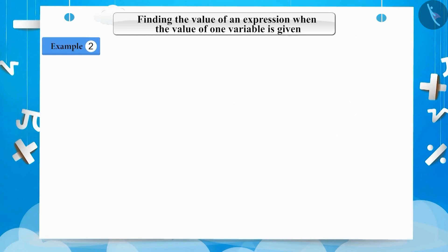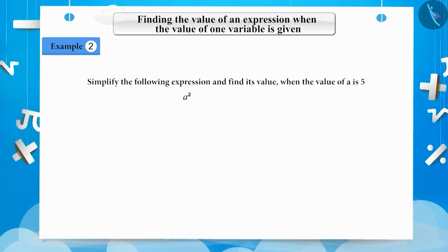Example 2. Simplify the following expression and find its value when the value of a is 5: a squared minus 3a plus 2. Simplifying this expression, we get a squared minus 3a minus 6.